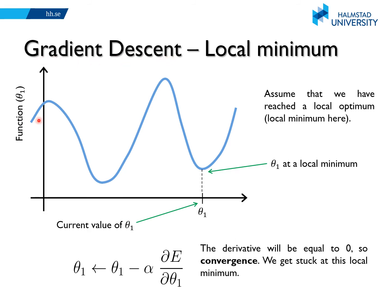You can also use gradient descent to optimize non-convex functions. For example, a non-convex function has a global minimum and some local minimums. If you reach a local minimum, you get stuck there because the derivative at that point will be zero, so theta 1 will not change. What you can do is apply gradient descent several times, each time starting with a different initial value for theta 1. For example, starting at one point might lead you to converge to the global minimum; starting at another point might lead to a local minimum. Then you take the theta that led to the overall minimum among those results.